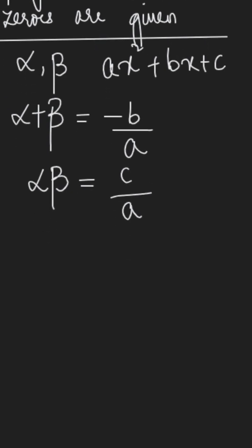To understand it more clearly, we will take an example. So let us say negative 5 and 1 are the zeros of the polynomial. Now we will form the polynomial.